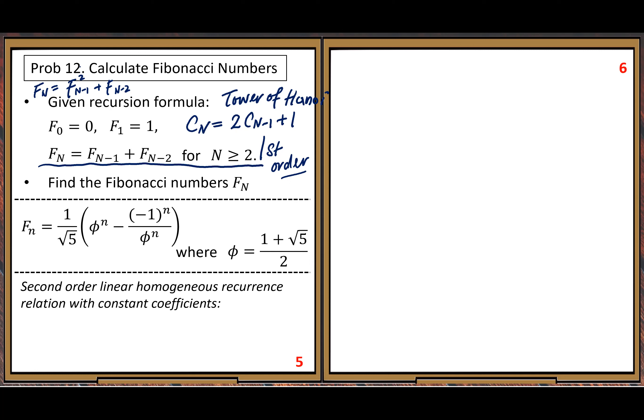Next: homogeneous. Homogeneous here means the constant part equals zero - you don't have a constant part. If you go back to Tower of Hanoi, you have a constant part, so that's not homogeneous. But for the Fibonacci recurrence relation there is no constant - no constant means homogeneous. That's easier - homogeneous case is easier than non-homogeneous case.